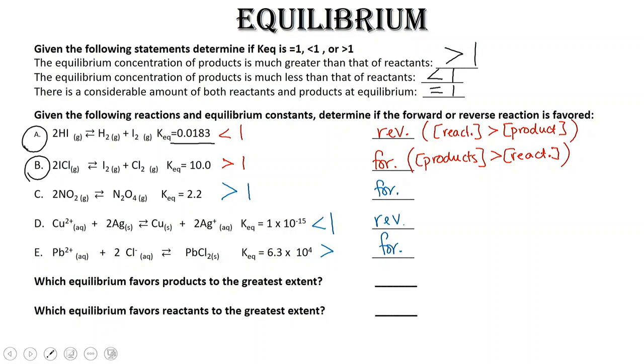Next, we have lead ion plus 2 chloride ions gives us lead chloride. Our equilibrium constant is greater than 1, and so that means our reaction would rather go forward.